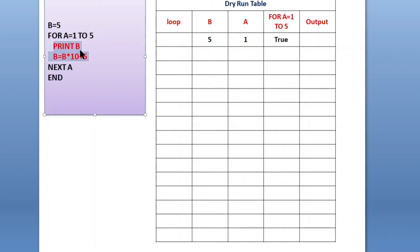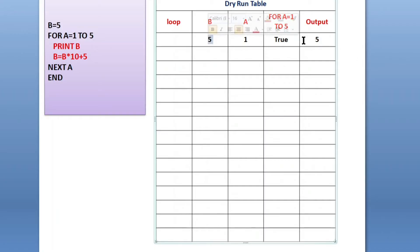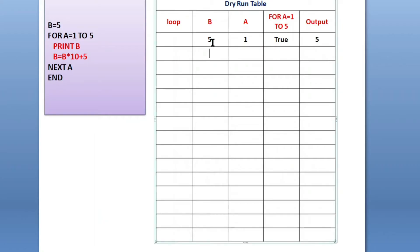When the condition is true, it will go to the next line inside the for loop. There are two lines: first is 'print b' — so the value of b will be printed in the output screen, that is 5. After print b, you can see 'b equals to b into 10 plus 5', so in the next line b = 5 into 10 plus 5, which gives 55.